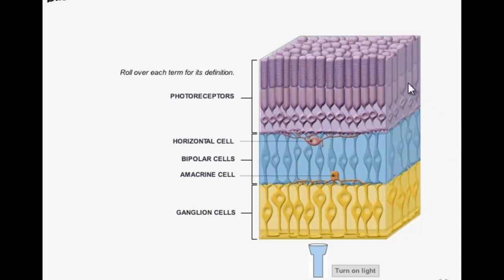Photoreceptors tell us about the intensity of light using graded potentials. Bipolar cells connect the photoreceptors and the ganglion cells. The ganglion cells receive input from bipolar cells and fire action potentials, which are sent to the brain via the optic nerve. There are two other types of cells that help mediate this signal: horizontal cells and amacrine cells.